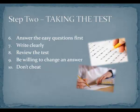Seven, write clearly. If the professor can't read the information, it is likely they will mark the answer wrong. Eight, review the test when you are finished. Don't leave early. Look at both sides of the paper and make sure you haven't skipped any items. Nine, be willing to change an answer, but only if you are confident that the initial answer is wrong. Most often, your first guess will be right.